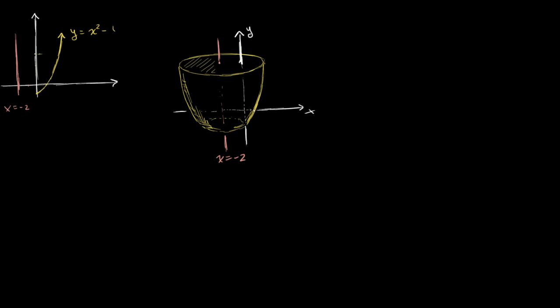Let's do another example. This time, we're going to rotate our function around a vertical line that is not the y-axis. So we're going to rotate y equals x squared minus 1, or at least this part of it, around the vertical line x equals negative 2.